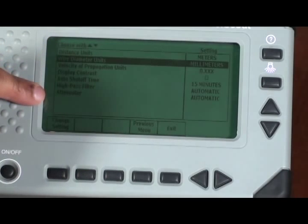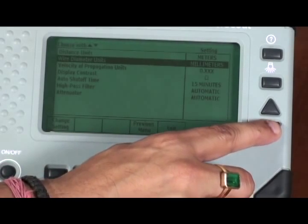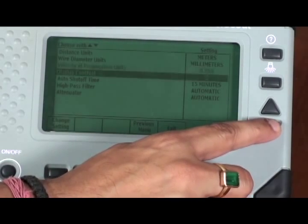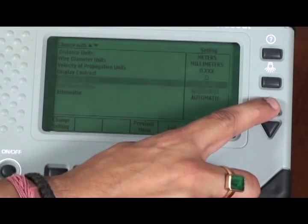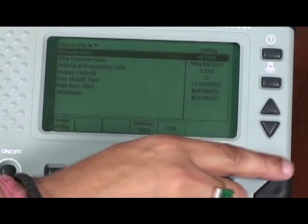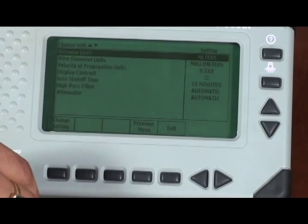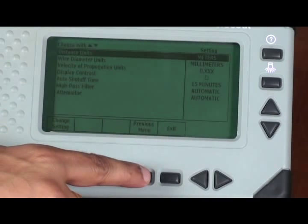This will enable you to set the units of measurement, say meters per microseconds or feet per microseconds, etc. Select the units and press the button of the previous menu to go back.